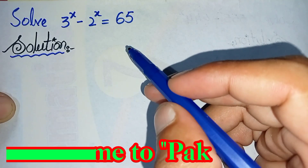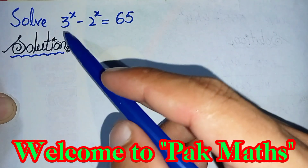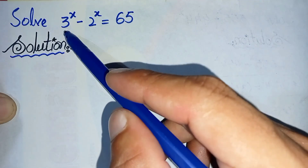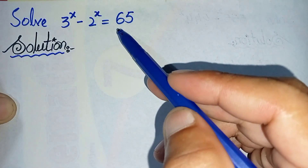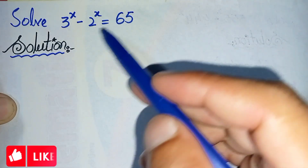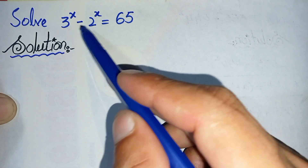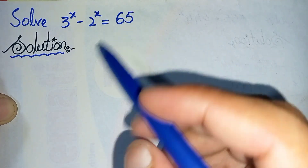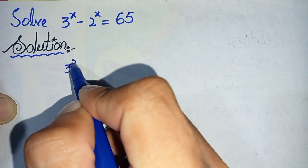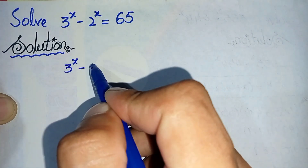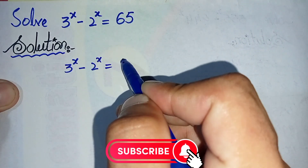Hello everyone, welcome to ParkMas. In this video I am going to solve this exponential problem: 3 raised to power x minus 2 raised to power x is equal to 65. To solve this properly, first we will write the solution and rewrite the question: 3 raised to power x minus 2 raised to power x is equal to 65.